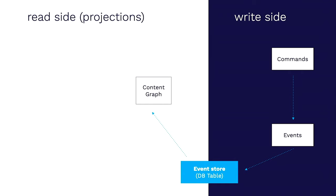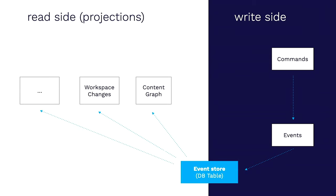In classical database models you normalize data — store it exactly once so updates happen in one place, which is great for many use cases but bad for read performance. By splitting into an event store and making the event store the source of truth, we can add additional read sides and additional projections. For example: a content graph for all tree information, another projection tracking which workspace has changes. By denormalizing our read side this way, we can improve performance quite a lot for many use cases.